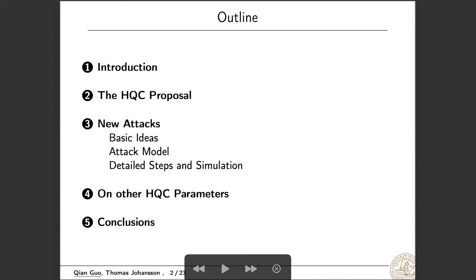I will start with the introduction, then give some background on the HQC proposal. Then I will discuss the new attacks in detail. As an instance, I will apply this attack to HQC 256-1, the first HQC parameter set for security level at least 5. Then I will discuss the influence of this attack on other HQC parameters. Finally, I will conclude the paper and discuss the countermeasures to this attack.